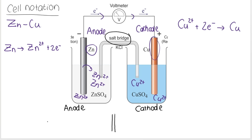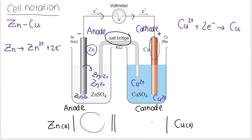On the furthest left would be your zinc electrode — it's a solid. On the furthest right-hand side would be your copper solid electrode. We separate our solids from the inside with a single line, and on the inside this represents the ions contained in the electrolyte solution.